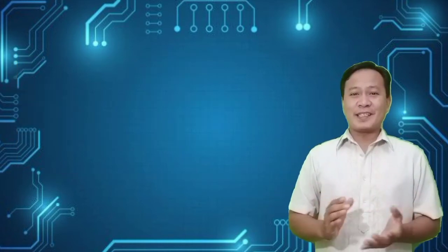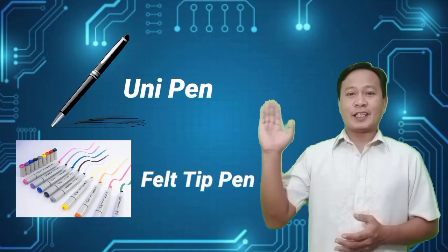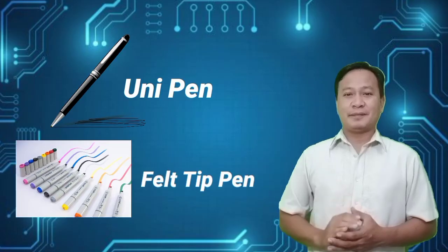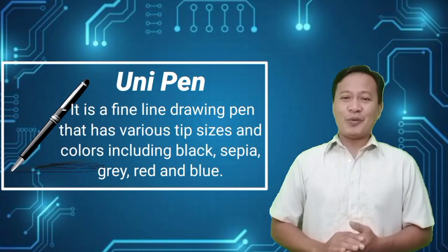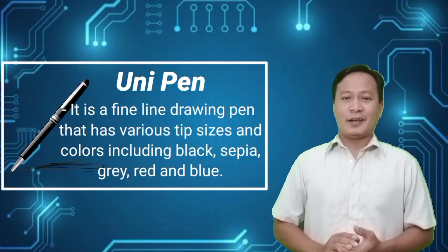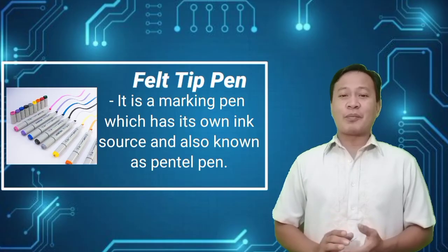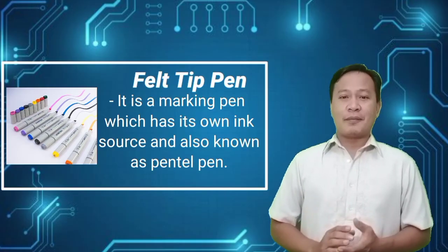Aside from the pencil, if you want to draw or sketch and put some colors on it, you can use a unipen or felt tip pen. Unipen or drawing pen produces a fine line or mark, while a felt tip pen produces a broader line or mark.